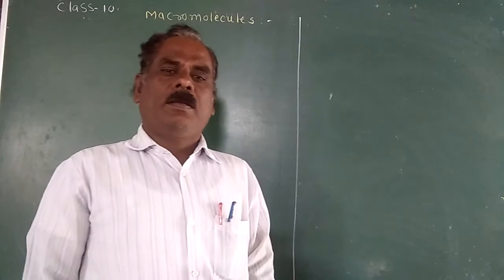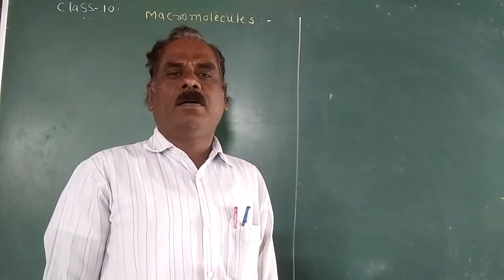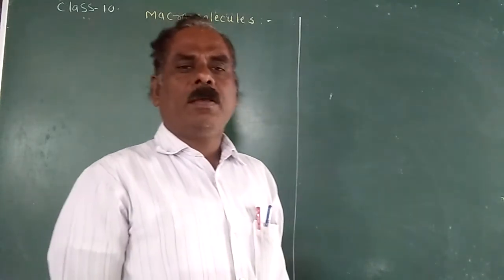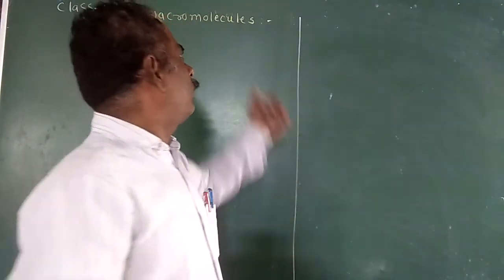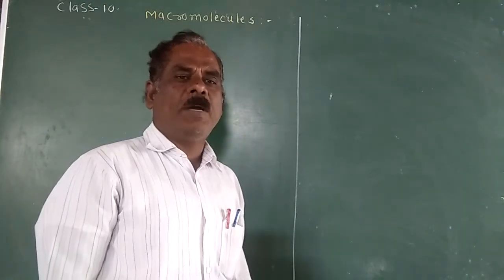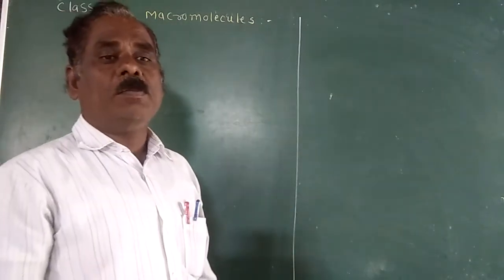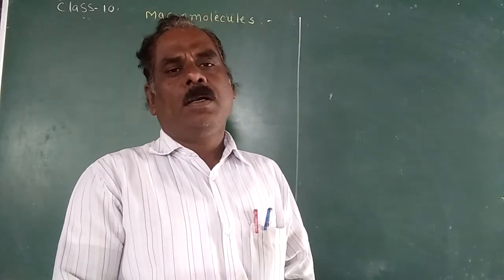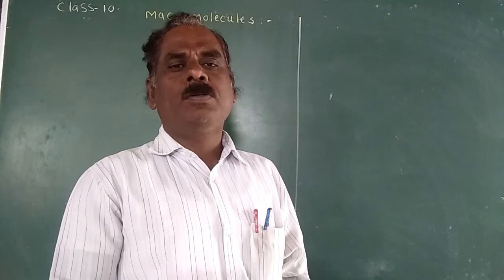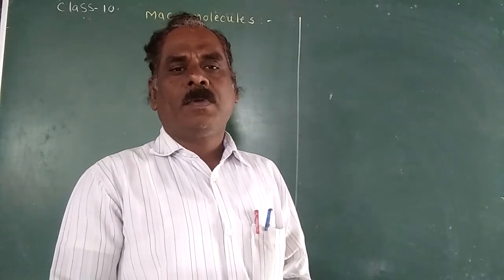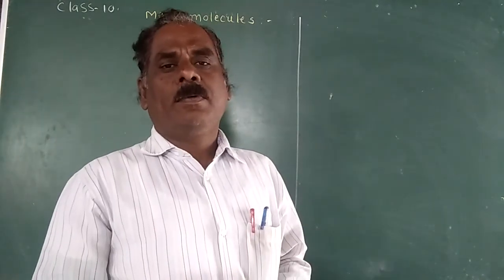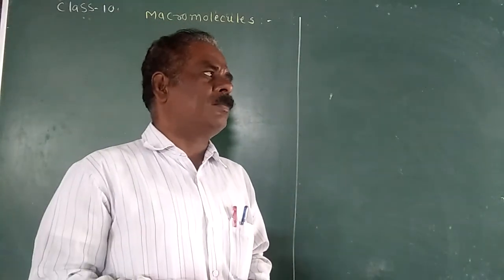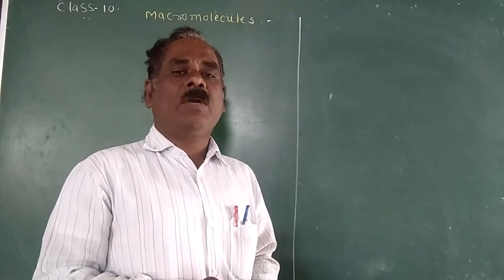Hello students. In the previous lecture we studied some important properties and uses of organic compounds. Today I will teach you the next point in the carbon compound chapter: macromolecules and polymers. You know that carbon compounds occur in very large numbers and generally have a high molecular weight. Such high molecular weight compounds made up from hundreds of thousands of atoms are called macromolecules.